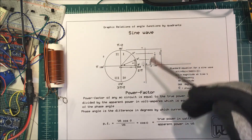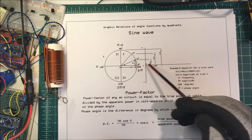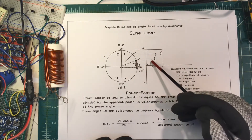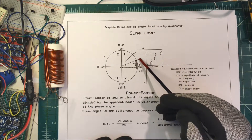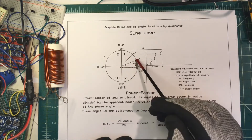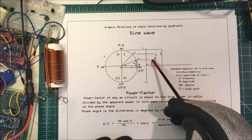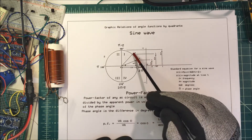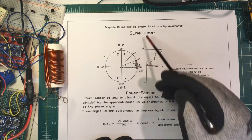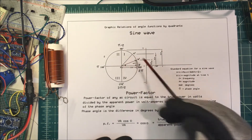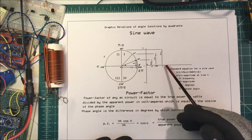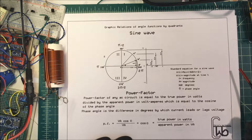This graphic shows the relations of angle functions by quadrants. When we plot our sine curve, we're taking this distance — the sine — and plotting it on a curve. For 30 degrees, we take the sine of angle theta times the hypotenuse to get our amplitude, and plot that on the curve, same for 45 and 90 degrees. In quadrants one and two, sine values are positive, so they plot above the axis; in three and four they're negative, so they come back down.